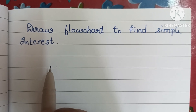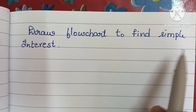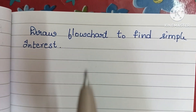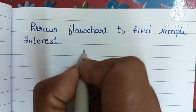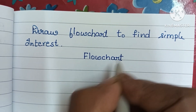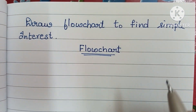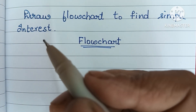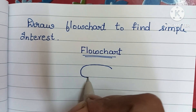Hi guys, in this video we are going to learn how to draw a flowchart to find simple interest. A flowchart is a graphical representation of a solved problem. We use different geometrical shapes — oval shape, rectangular shape, parallelogram shape, and diamond shape — to draw a flowchart.